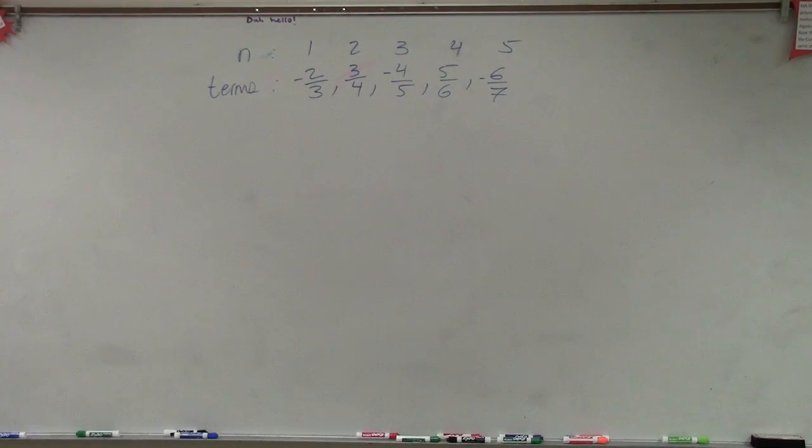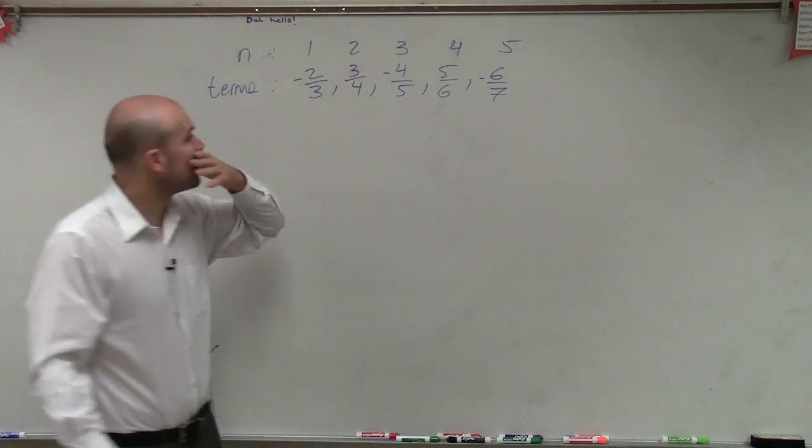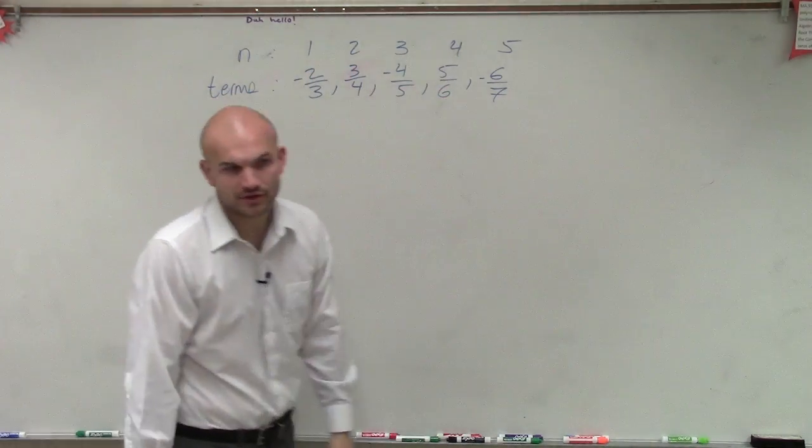OK. So ladies and gentlemen, what we need to do in this case is we have our n, which is a sub 1, 2, 3, 4, and 5. And then we have the current values.